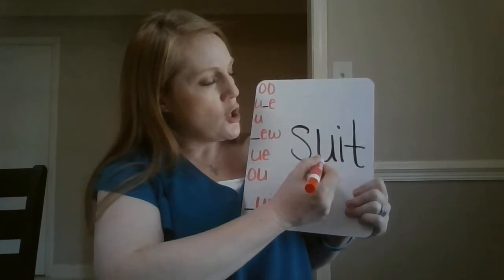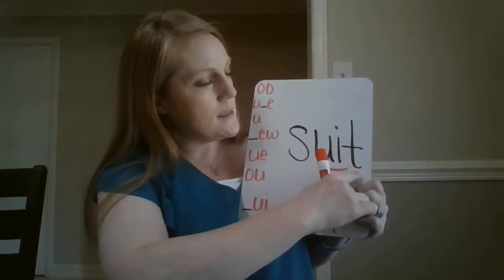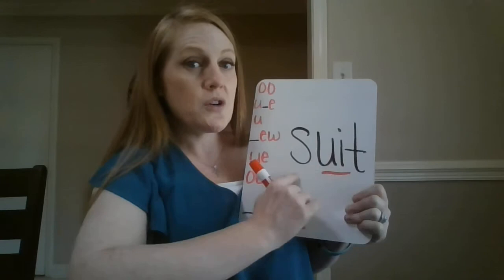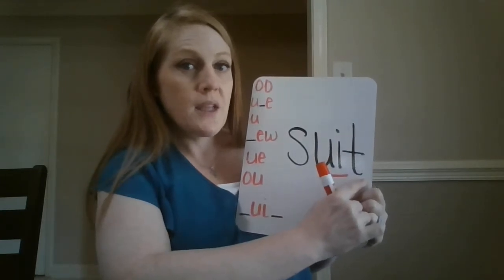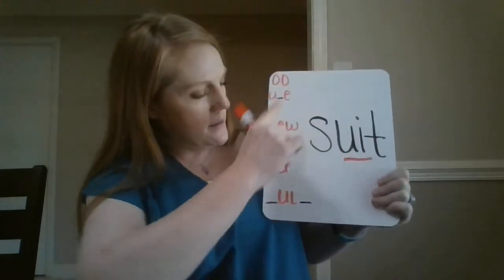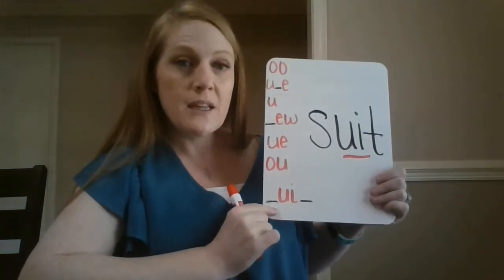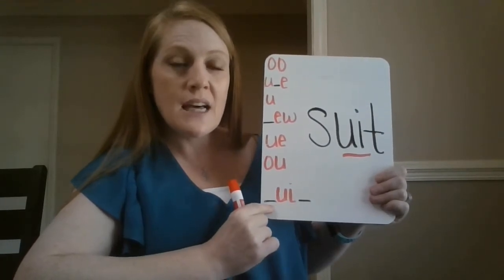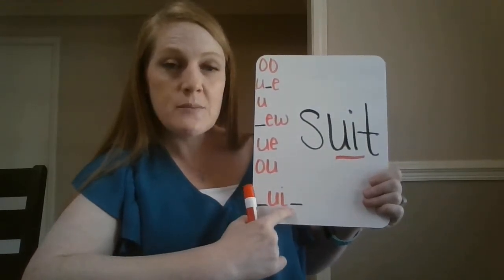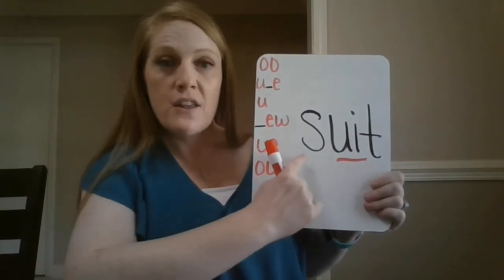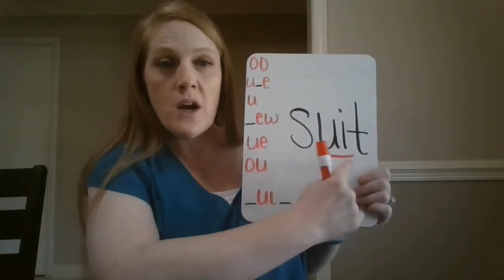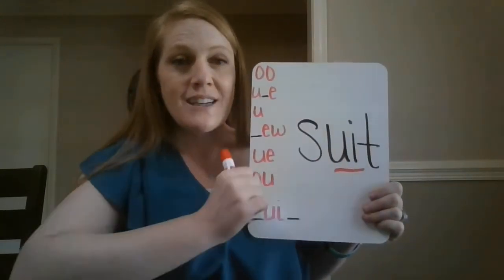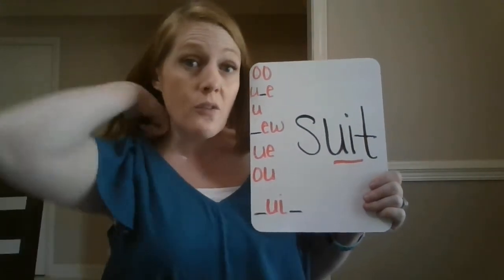S, OO, T — suit. This word is suit, and it uses our U-I spelling. Remember it has to have a consonant before and after the spelling. So in suit, we have the S before and the T after the spelling. U-I is going to come in the middle of a word.